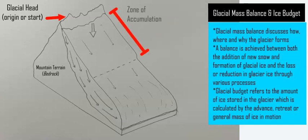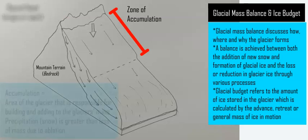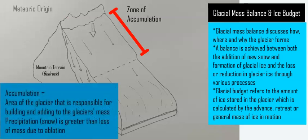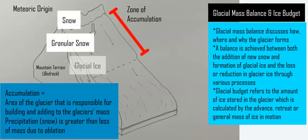The top section, between the dashed line and the top of the mountain, which is the head or origin of where the glacier is formed, is called the zone of accumulation. This is where you have the precipitation — the snow — based on the climate and elevation, accumulating at this section of the glacier. The build-up of snow turns to granular snow, then into glacial ice after a couple of years of accumulation, compression, pressure, and an increase in density and smaller volume.